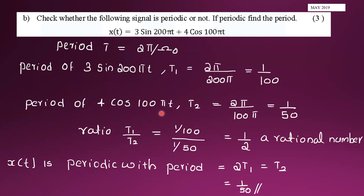The period of 4cos(100πt) is T2 = 2π / 100π = 1/50. The ratio T1/T2 = (1/100) / (1/50) = 1/2, which is rational. Therefore the signal is periodic with fundamental period T = 1/50.